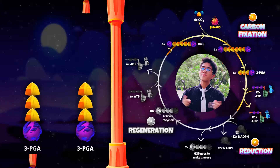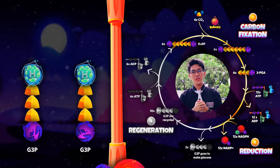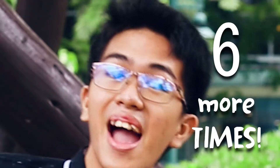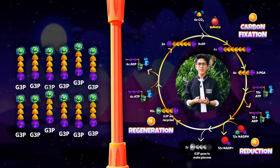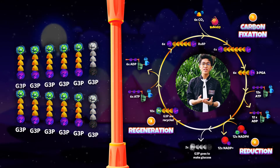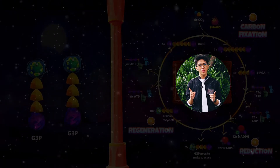An enzyme named Rubisco merges carbon dioxide and ribulose bisphosphate. It becomes unstable and breaks down to 3-phosphoglyceric acids. The results from the light reaction energize these to turn into glyceraldehyde 3-phosphate. To fully start the cycle again, we need 12, so this process needs to happen 6 more times. Now we have 12 G3Ps — the cycle uses 10 to regenerate the RUBPs consumed, and uses the remaining 2 to build glucose.